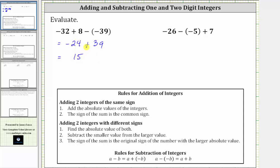We're again following the rules for adding integers with different signs. We take the absolute value of both integers. The absolute value of 39 is positive 39; the absolute value of negative 24 is positive 24. Now we subtract the smaller value from the larger value, which gives us a difference of 15, because the positive 39 had the larger absolute value. The sum is positive 15.